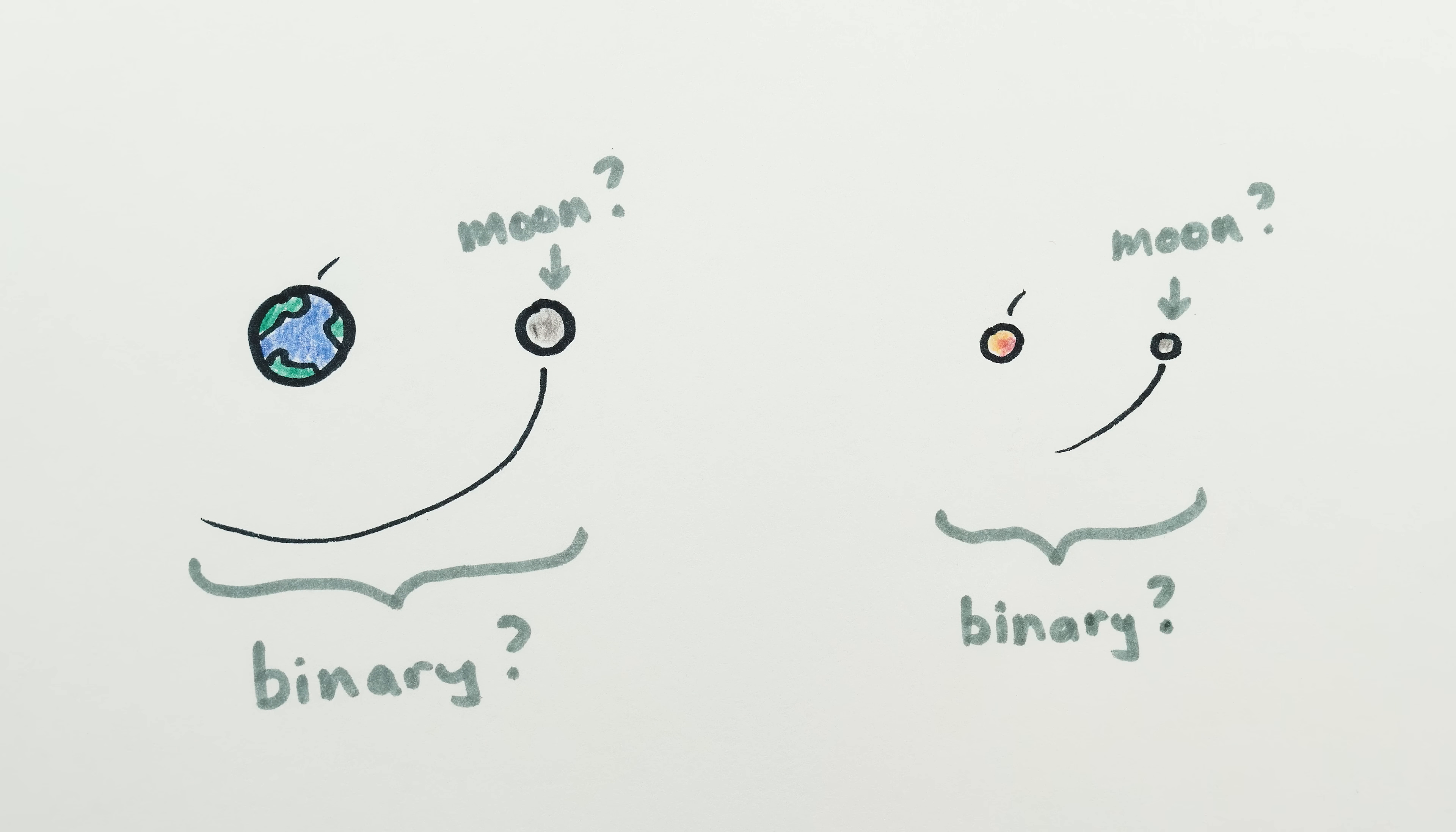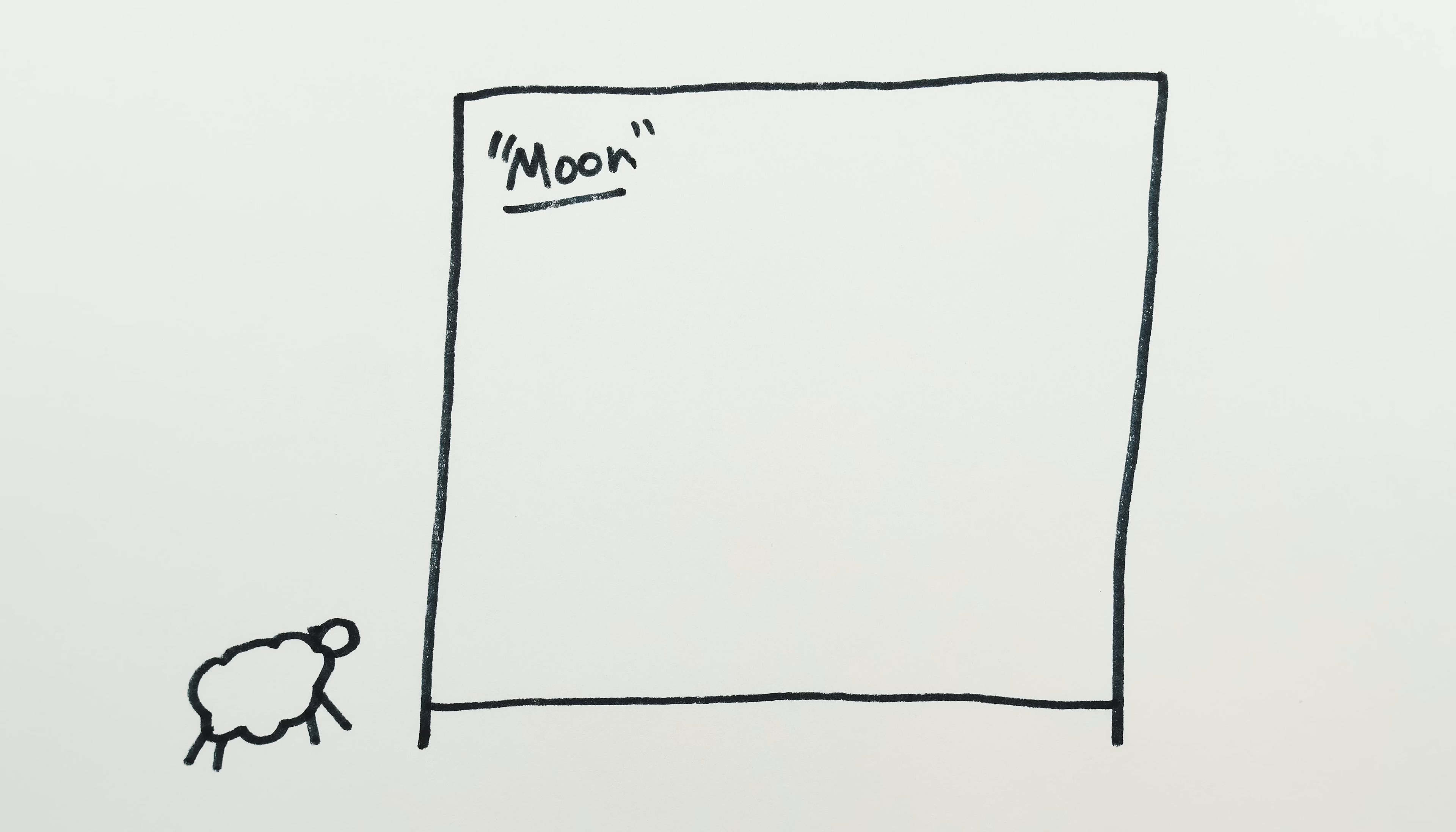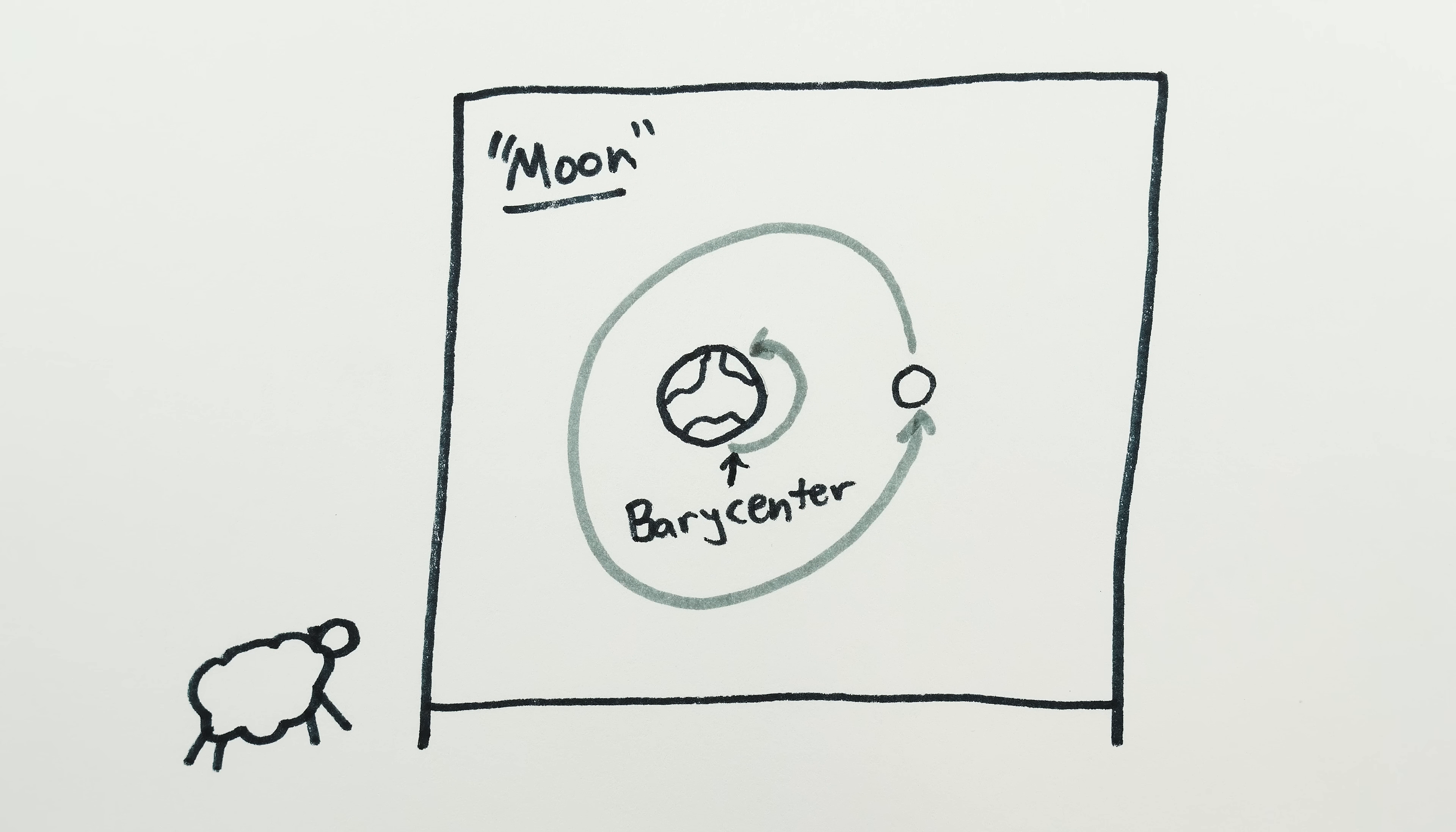What about Pluto and its moon, Charon? Normally, we say the Earth and Moon orbit around their common center of mass called their barycenter, and the Earth is sufficiently heavier than the moon so the center of mass is actually inside the Earth, which means we can say it's the moon that orbits the Earth rather than the two orbiting each other.